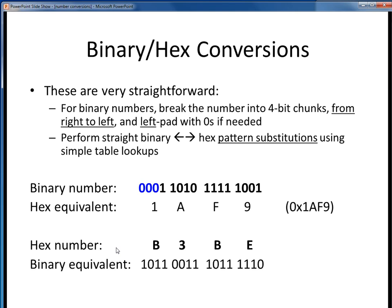Going in the other direction, the steps are the same. Hex B becomes binary 1011. Hex 3 becomes binary 0011. Hex B again is binary 1011. And hex E becomes binary 1110. And here is the equivalent binary number. Once again, these two conversions are nothing more than simple table lookups between binary and hex.